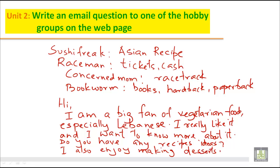This is how you write an email question to one of the hobby groups on the web page. This group will read your question and they will reply to it. You should know what the different hobby groups are, and then write very simple, to-the-point questions like: 'I am a big fan of vegetarian food, especially Lebanese. I really like it and I want to know more about it. Do you have any recipes or ideas?'